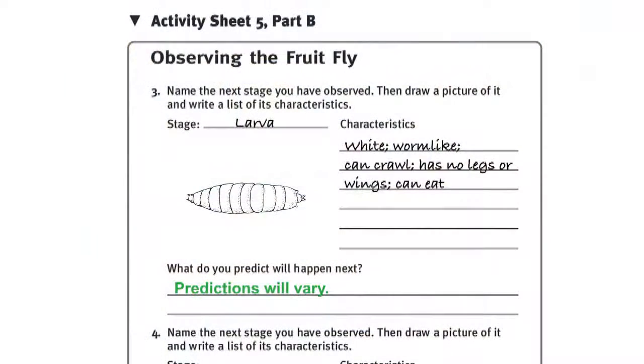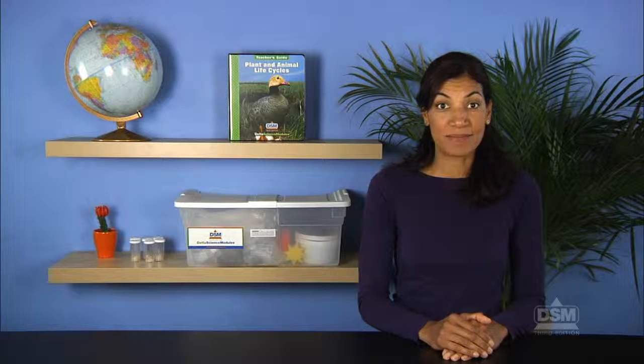At this point, accept all reasonable predictions. Encourage students to write their predictions to complete Question 3 and to work together to record daily observations, noting changes on their Activity Sheets. To conclude Session 2, have students return their vials, magnifiers, and science journals to the designated area.